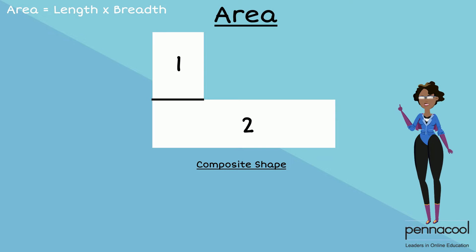The rectangle on top has a length of 4 meters and a width of 7 meters. And the rectangle below has a length of 12 meters and a width of 3 meters.